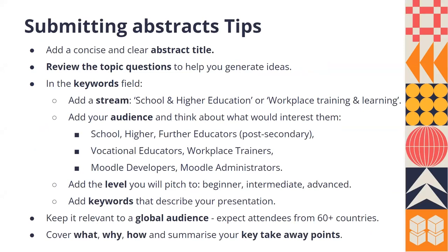Here are some tips on how to write a quality abstract submission. Make sure you add a concise and clear abstract title, then review those topic questions to help you generate ideas. In the keywords field — it's actually called the metadata field now — when you submit you should add a stream, either 'school and higher education' or 'workplace training and learning'. Then you need to add your audience and think about what would interest them, so you might be pitching your presentation to school, higher or further education providers, vocational educators and workplace trainers, Moodle developers or Moodle administrators, or a mix of those.